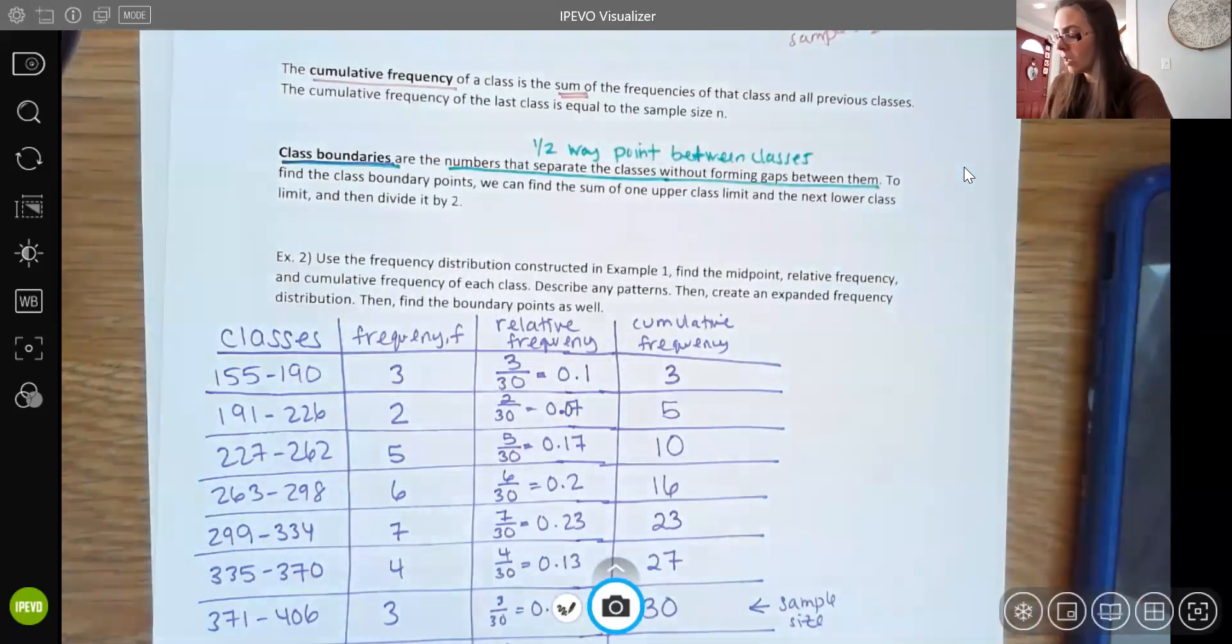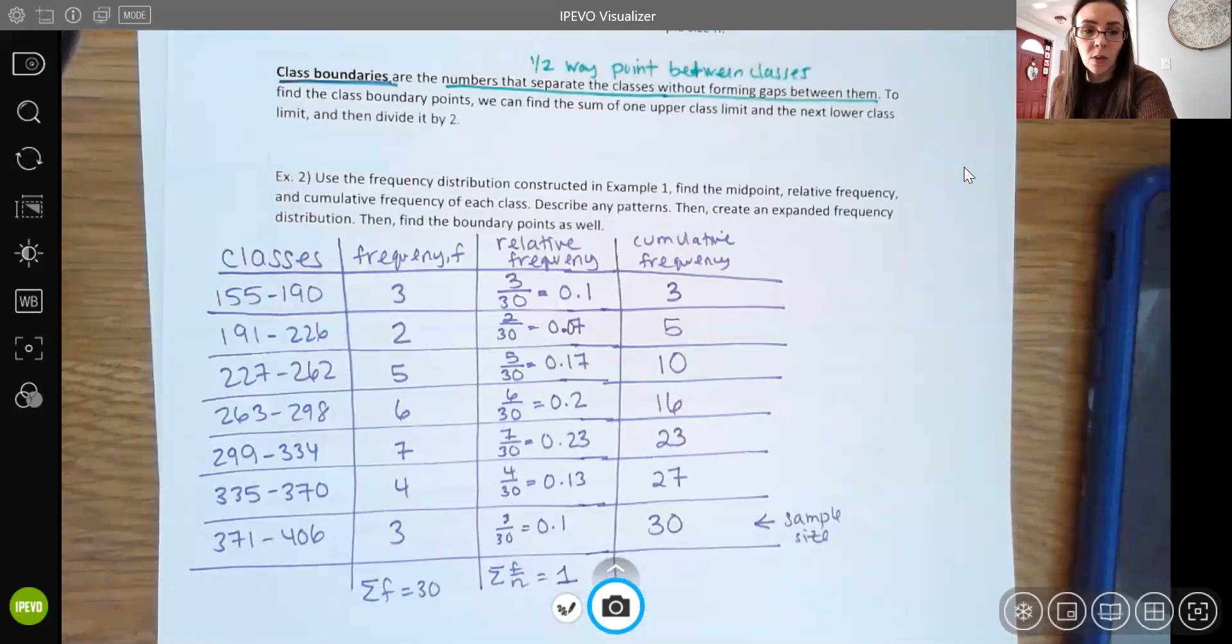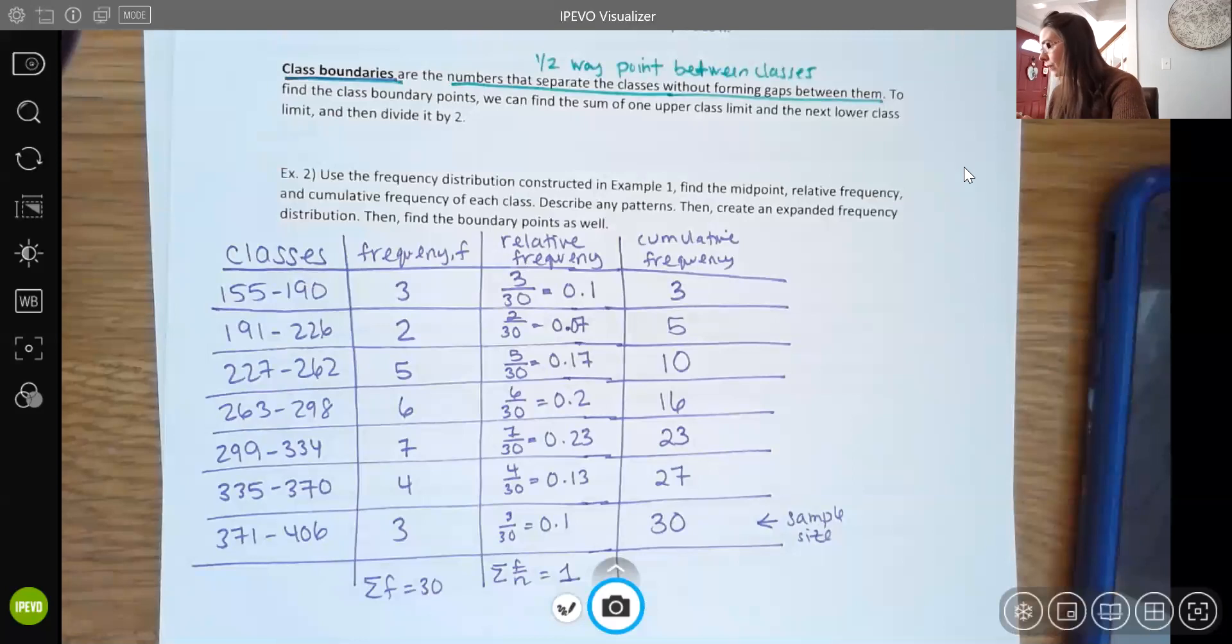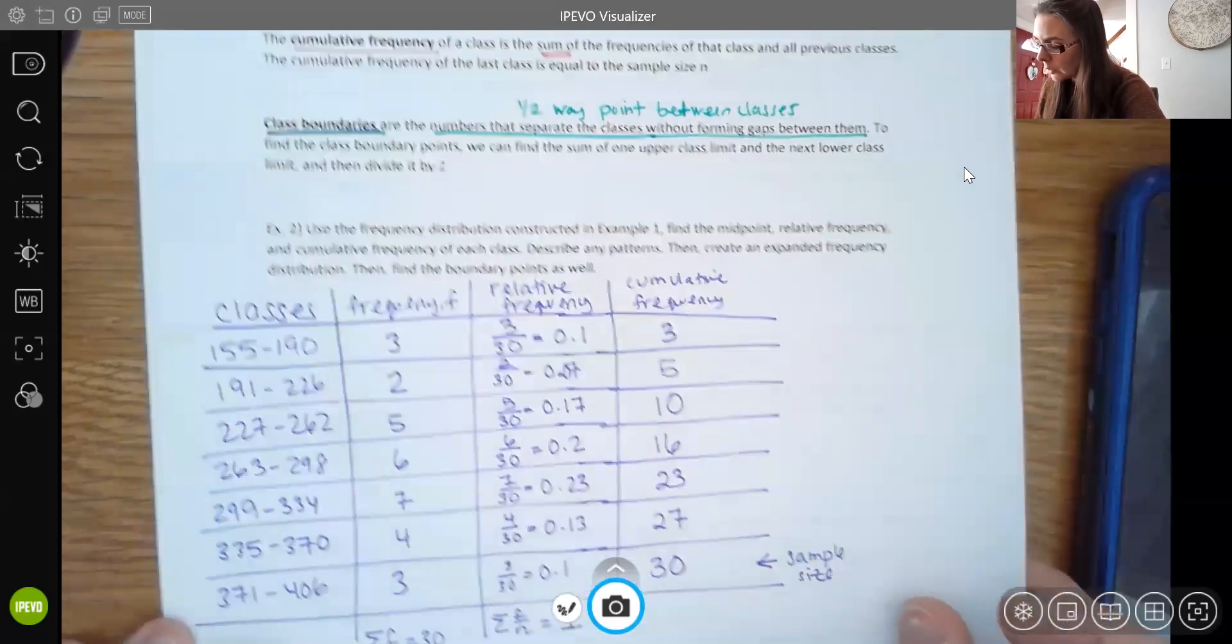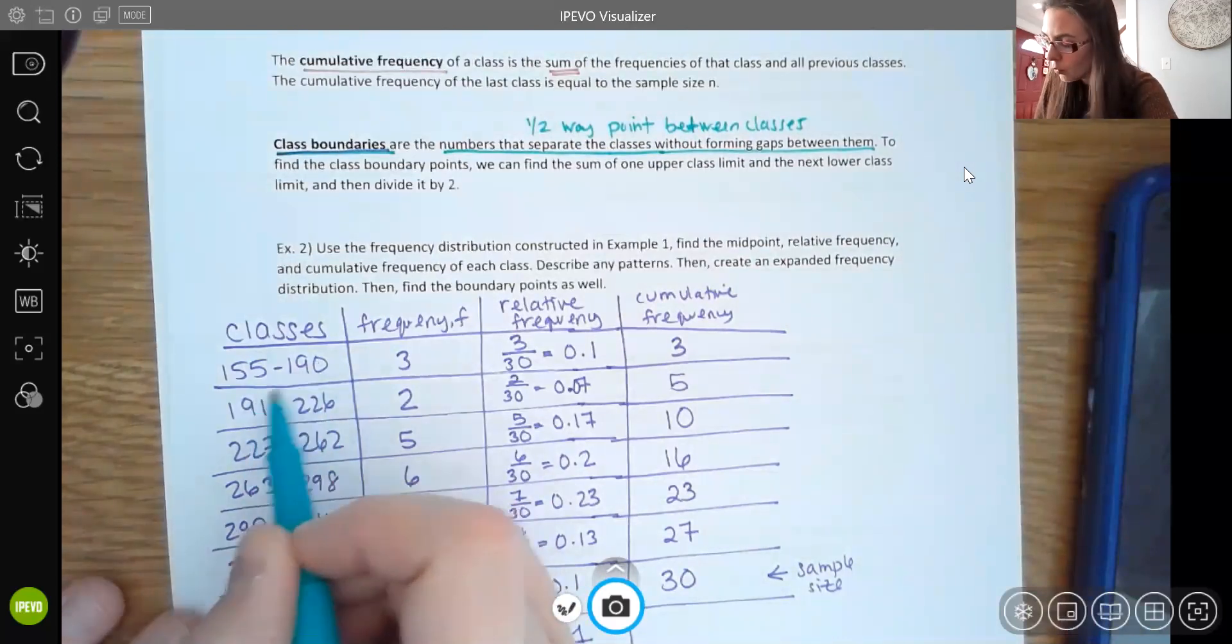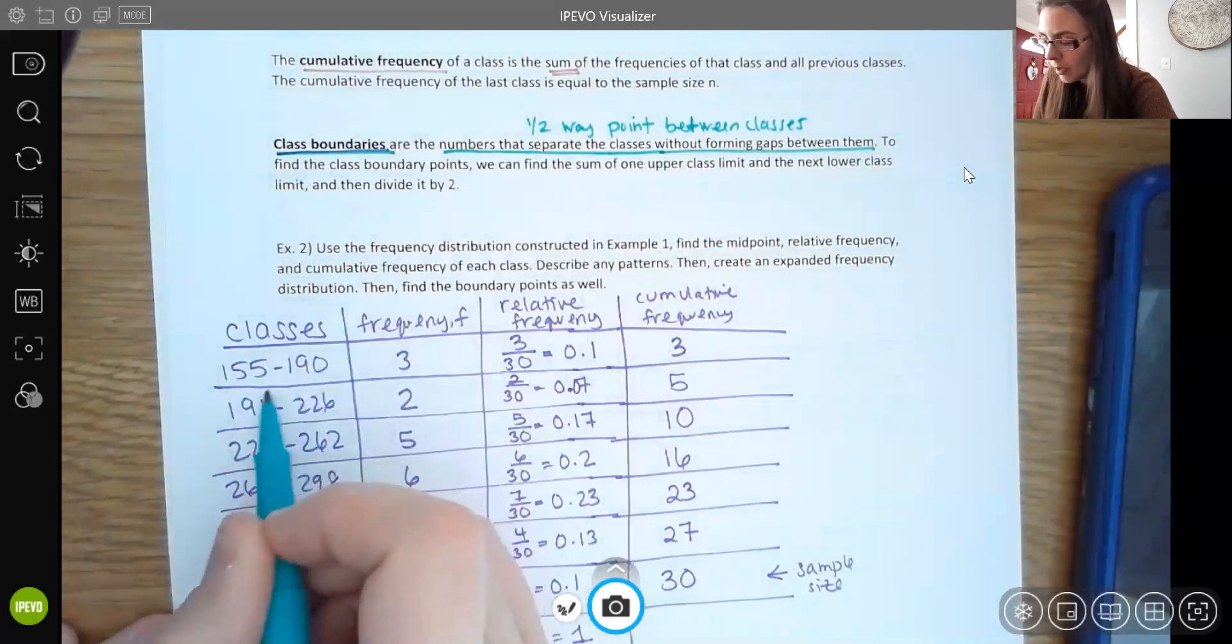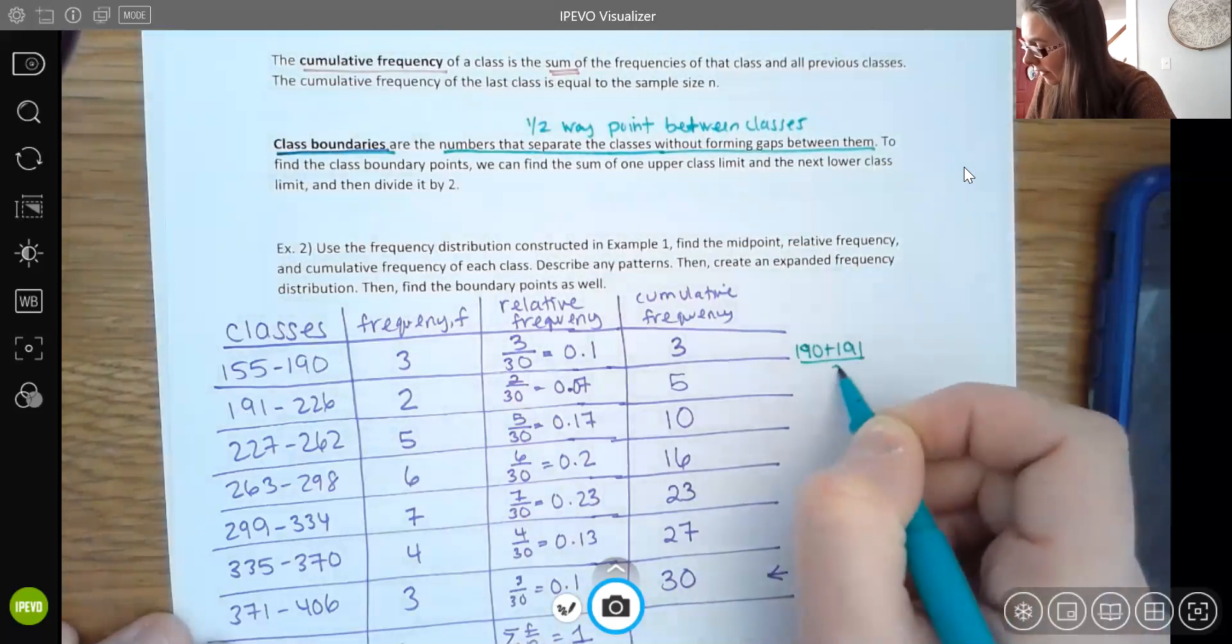Now, when you're dealing with whole numbers, then your boundary point is always going to have a half in it. It's going to be the halfway point. Your classes don't have to have whole numbers though. We tend to see that most often, but you can have classes that have fractions and decimals and things like that. So it's still the halfway point between the two. So when you're finding your halfway points, what you can do for the boundary points is take the average. So here you're going from the upper to the lower. So I would do 190 plus 191 and divide that by 2.